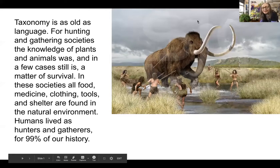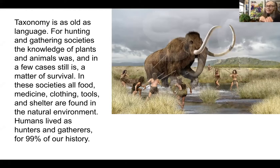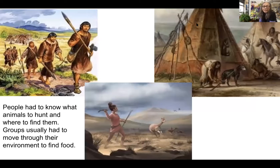Human beings have lived as hunters and gatherers for 99% of the time we've been on the planet. If we take all of human existence as 100 days, we've been the way we are now — with agriculture and cities — for only one day. For 99% of our history, we lived in small groups and hunted and gathered. We killed animals, fished, and gathered seeds, nuts, berries, roots, and leaves to eat. That's how we survived. That knowledge of plants and animals was — and in a few remaining hunting and gathering societies, still is — a matter of survival. Everything came from what we could find in the environment: food, medicine, clothing, tools, shelter. So we all had to be really good scientists.